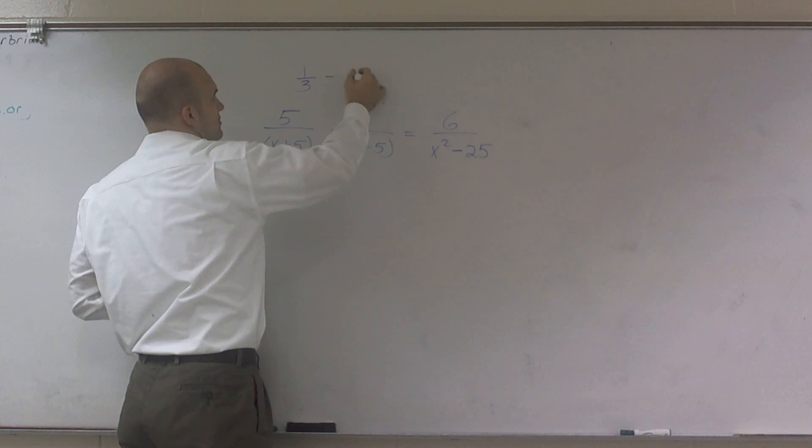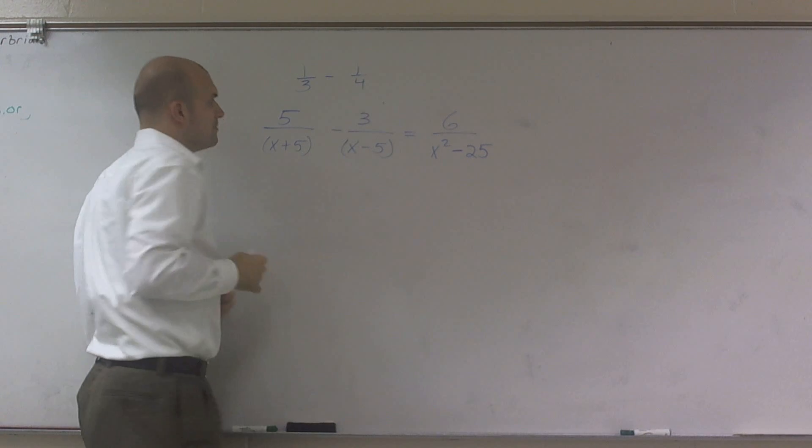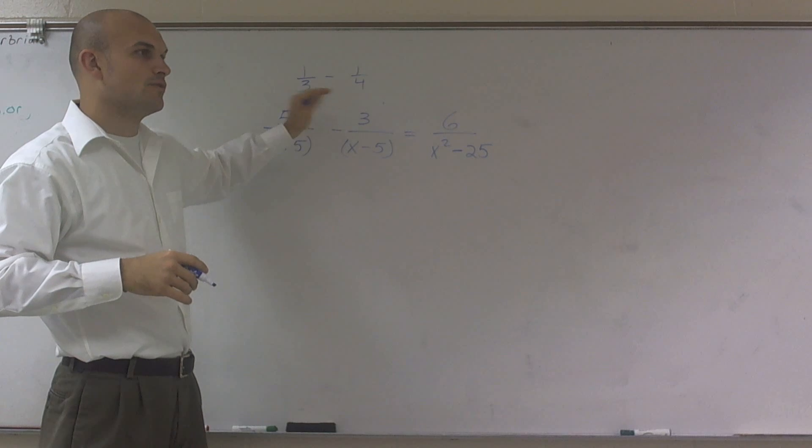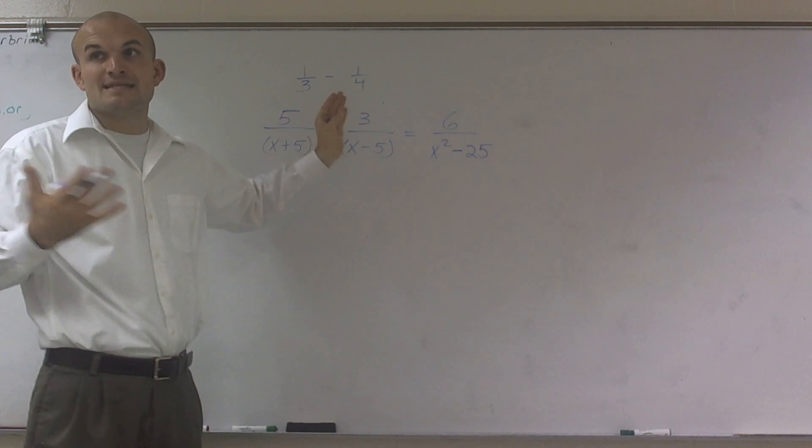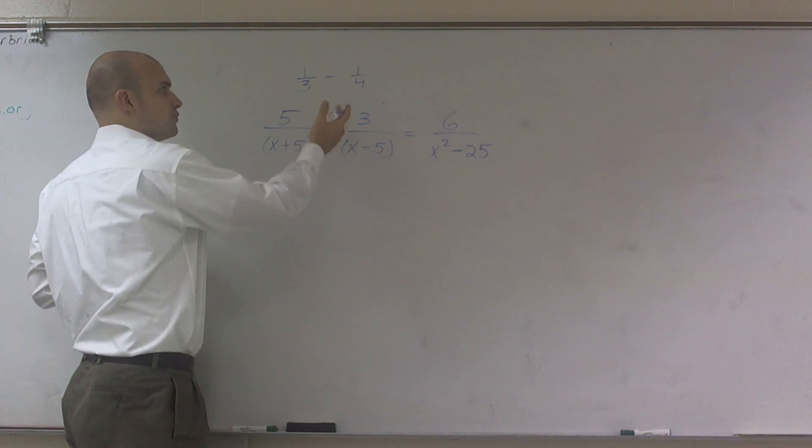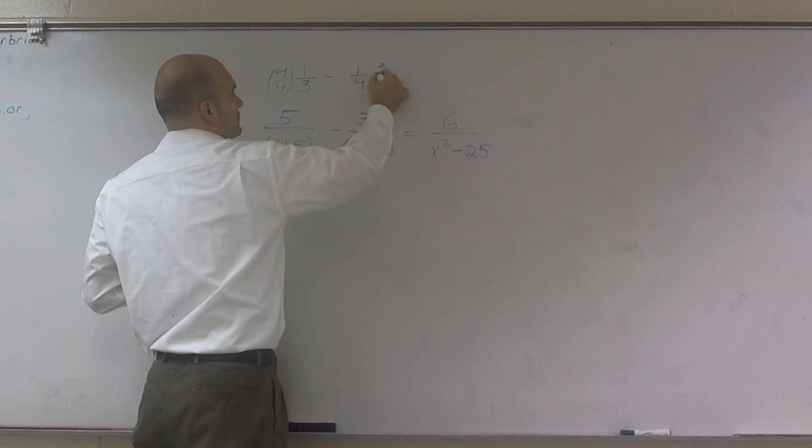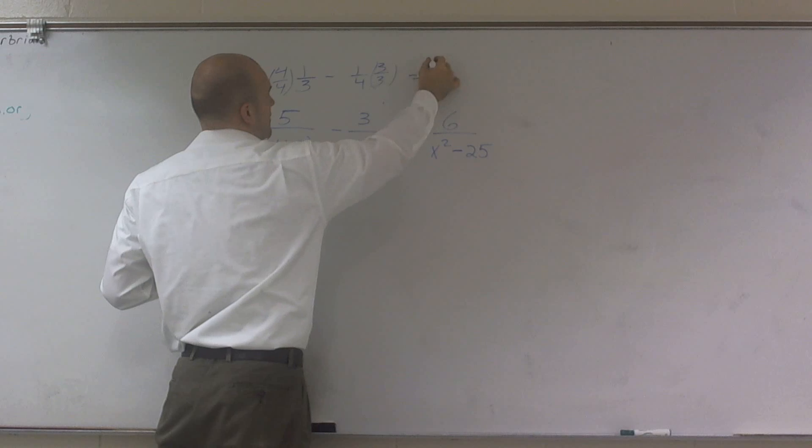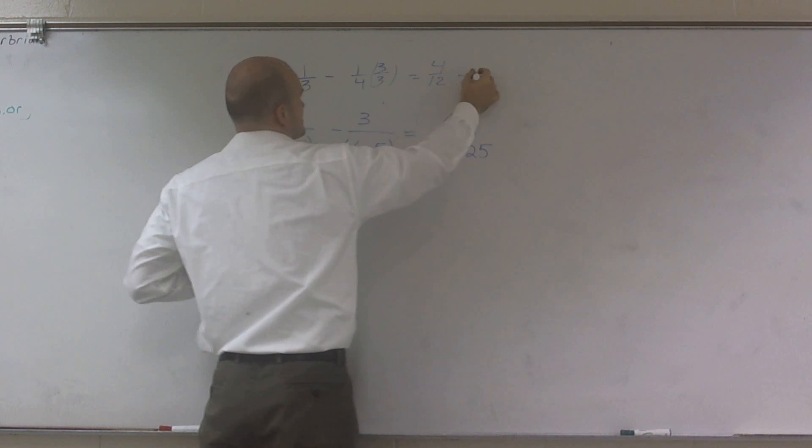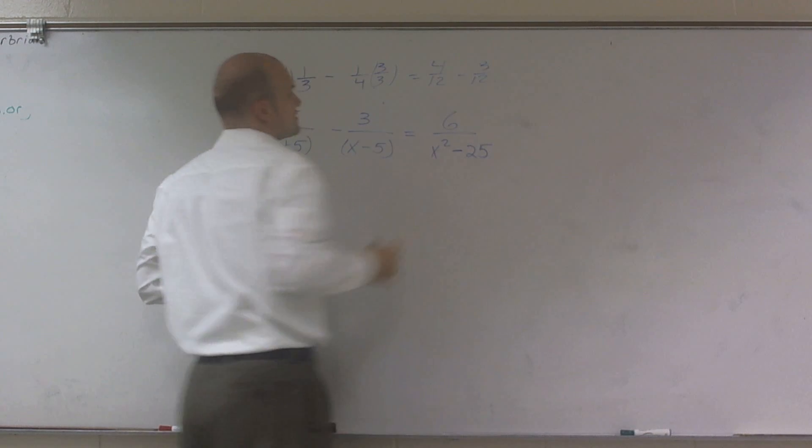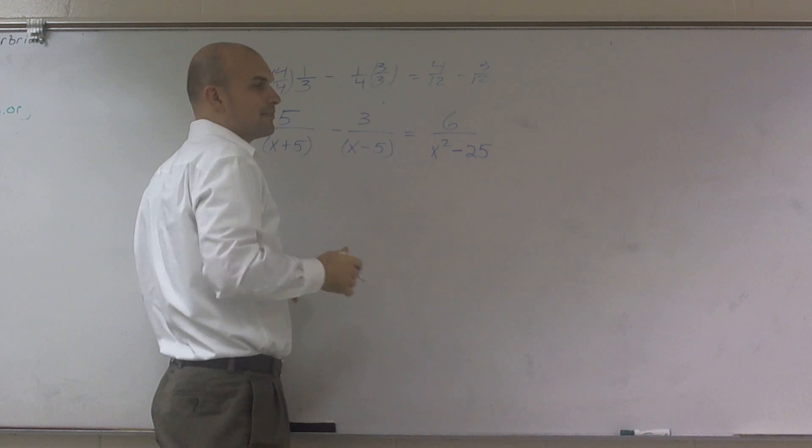If I did 1 third minus 1 over 4, I remember you had to get these to be the same denominator, which usually you want to pick your least common multiple, which was 12. So what I would have to do is multiply by 4 over 4 on this side and 3 over 3 on this side. And then what I got was 4 twelfths minus 3 twelfths. Then from there, I could solve my problem, right?